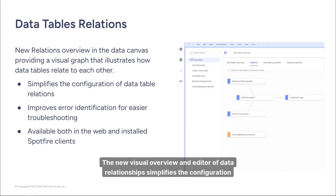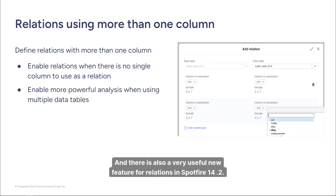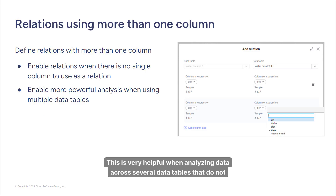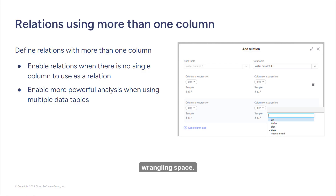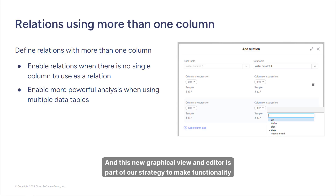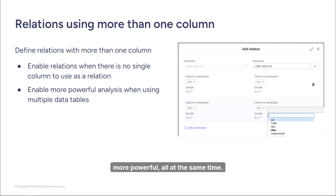The new visual overview and editor of data relationships simplifies configuration of data table relations and makes it available in the Spotfire web client. There is also a very useful new feature for relations in Spotfire 14.2: the ability to define relations between data tables using more than one column. This is very helpful when analyzing data across several tables that do not have a single column representing the type of relation you want to use. This new graphical view and editor is part of our strategy to make functionality easier to use, available in the web UI, and to add new features to make Spotfire more powerful.